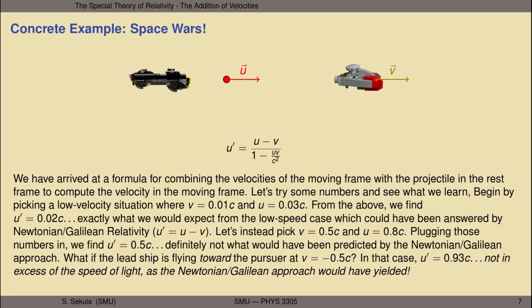The old Galilean approach would have predicted that the lead ship observes the projectile approaching at a speed far in excess of the speed of light. But we know from the postulates of special relativity that nothing can move faster than the speed of light, and we see that this is preserved in the velocity transformation. Although the naive addition of velocities would give something exceeding c, the special relativistic transformation shows the velocity comes in at a fair fraction of the speed of light without exceeding it.